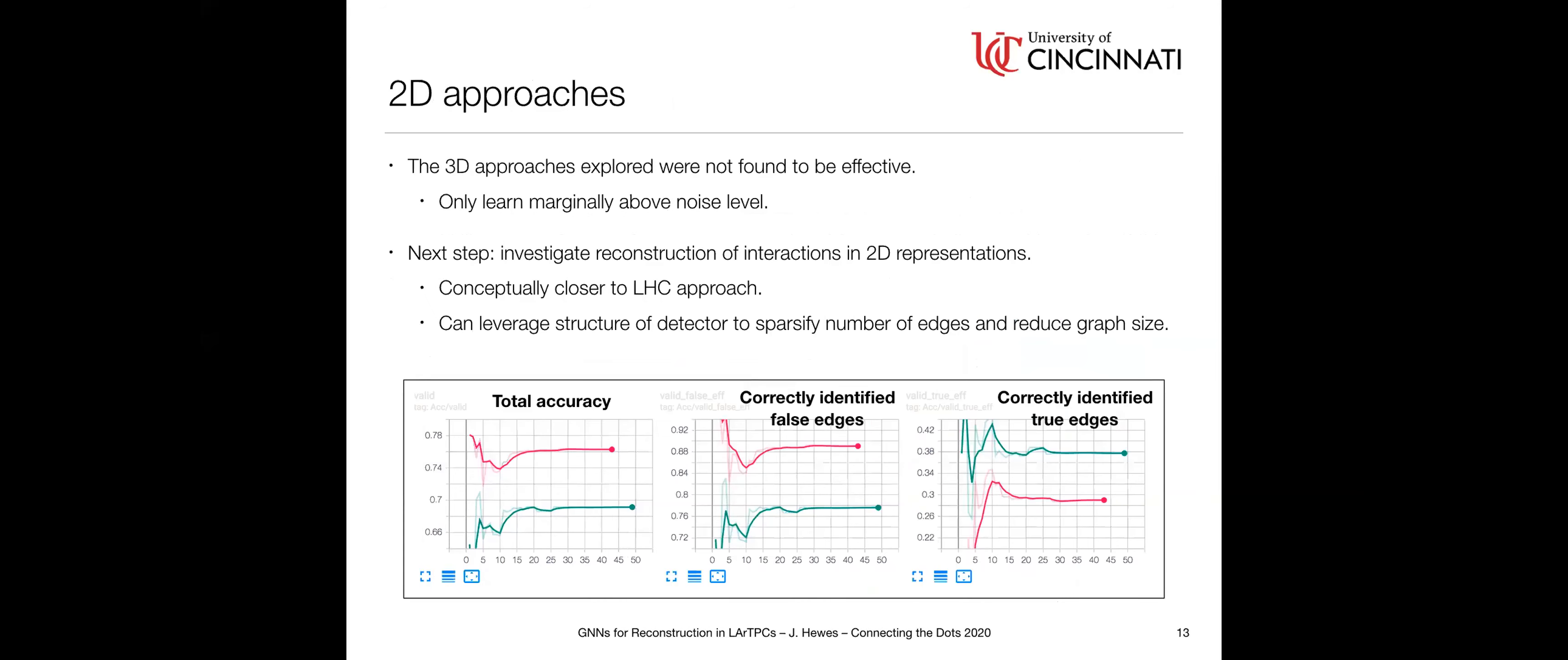Like I said at the top of the talk, we don't have any results to show. That's because the 3D approaches we explored, I didn't find them to be particularly effective. I have some training metrics at the bottom of the slide here. When you compare the accuracies for true and false edges, they are a little better than random by a few percentage points, but not by much. It was only ever for both of these approaches able to learn marginally above noise level. The next thing we are looking into now after not having too much luck with these 3D approaches is moving closer to the raw data and looking at reconstructing these interactions in the 2D representations themselves.